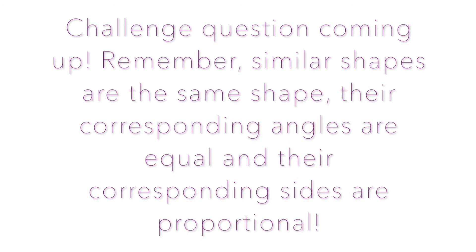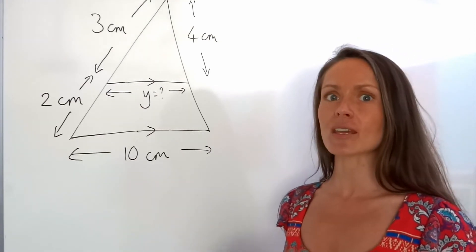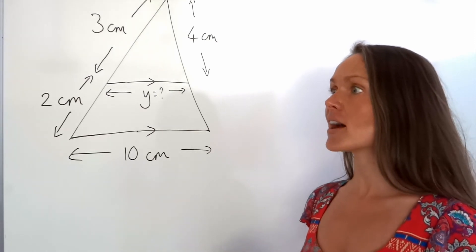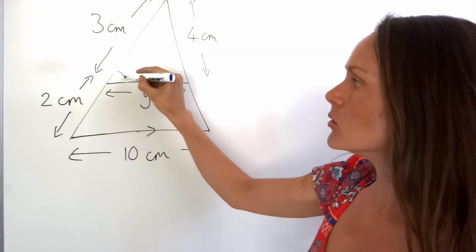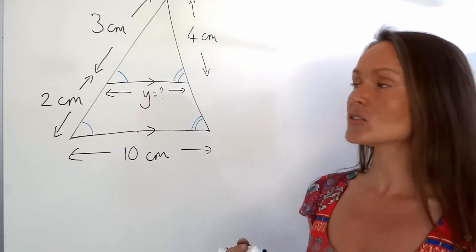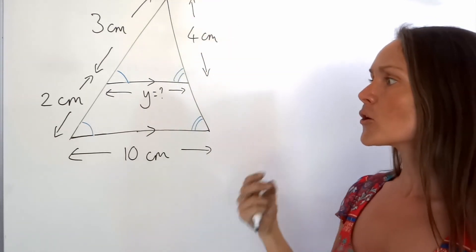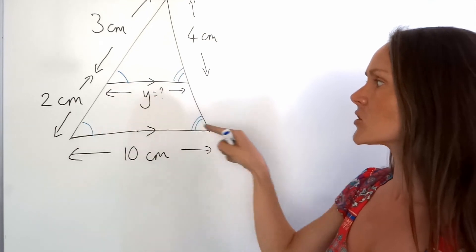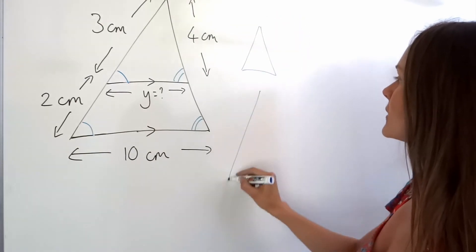One more to finish. This last question looks a little bit confusing because there's only one shape, but if you look carefully there are actually two similar triangles. See these parallel lines? That means this angle corresponds to this one, so they're the same, and this angle corresponds to this one. So there are two similar triangles — the small one and the large one. Don't make the mistake of taking the small triangle and the trapezoidal shape, because that's a trapezium and they're completely different shapes.